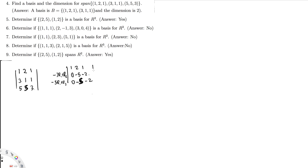So if you see, we have the second row and third row with the same numbers. So we can eliminate one of them by multiplying the other one by negative 1 and adding it to the other one. So we get 1, 2, 1 then 0, minus 5, minus 2. And negative R2 plus R3 gives us 0, 0, 0.